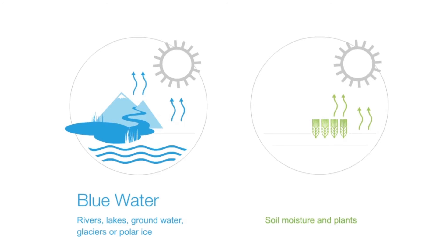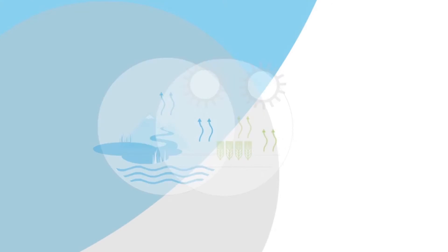The moisture stored in the soil and the water that evaporates from plants is called green water. The share of green water is quite significant and is tied to vegetation.